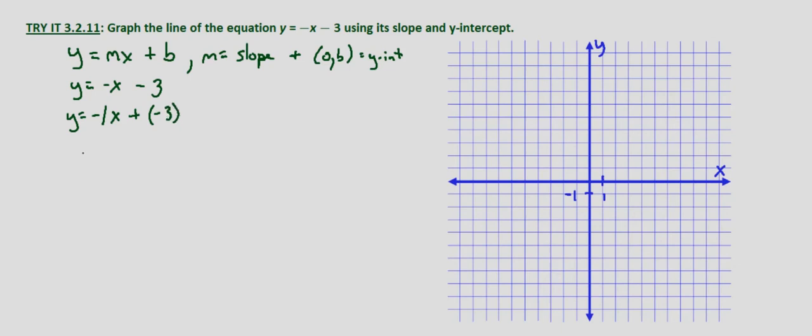So what that tells us is that the slope m equals negative 1 and the y-intercept is 0 negative 3, because b equals negative 3 in the form y equals mx plus b.